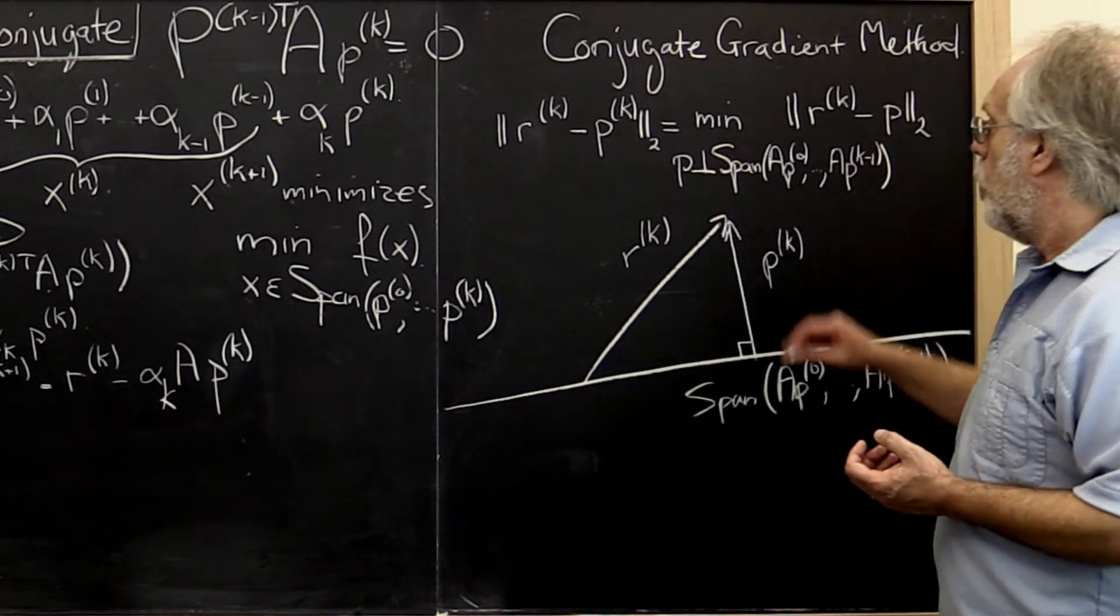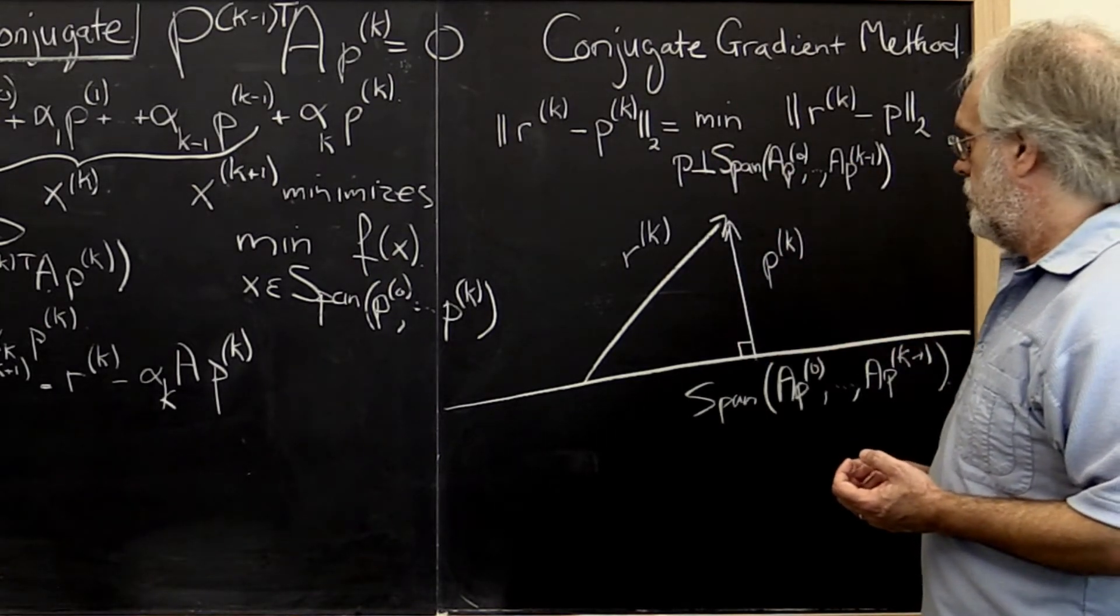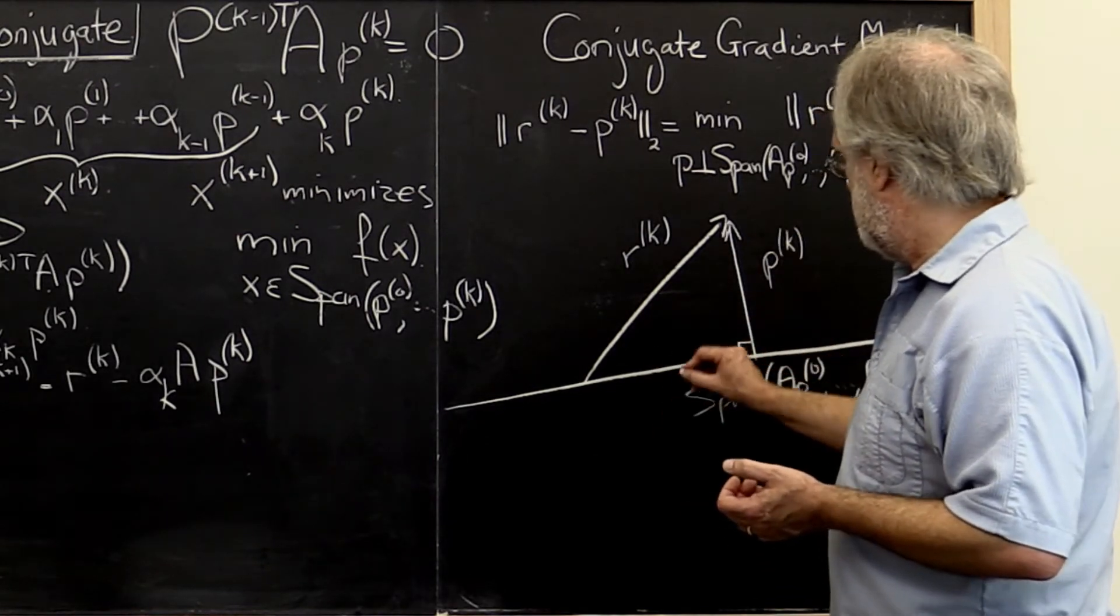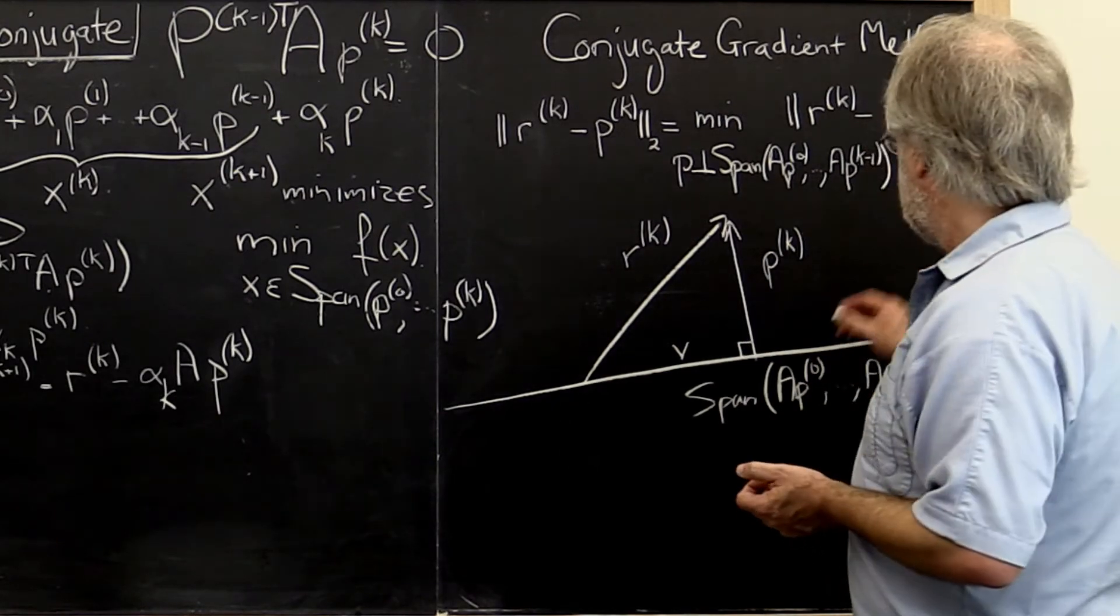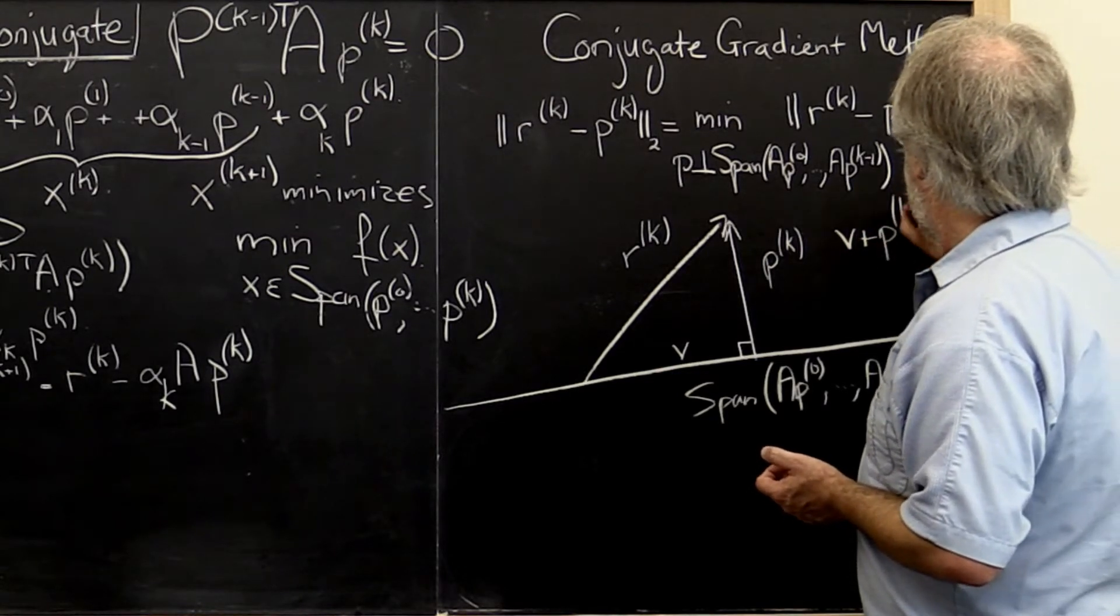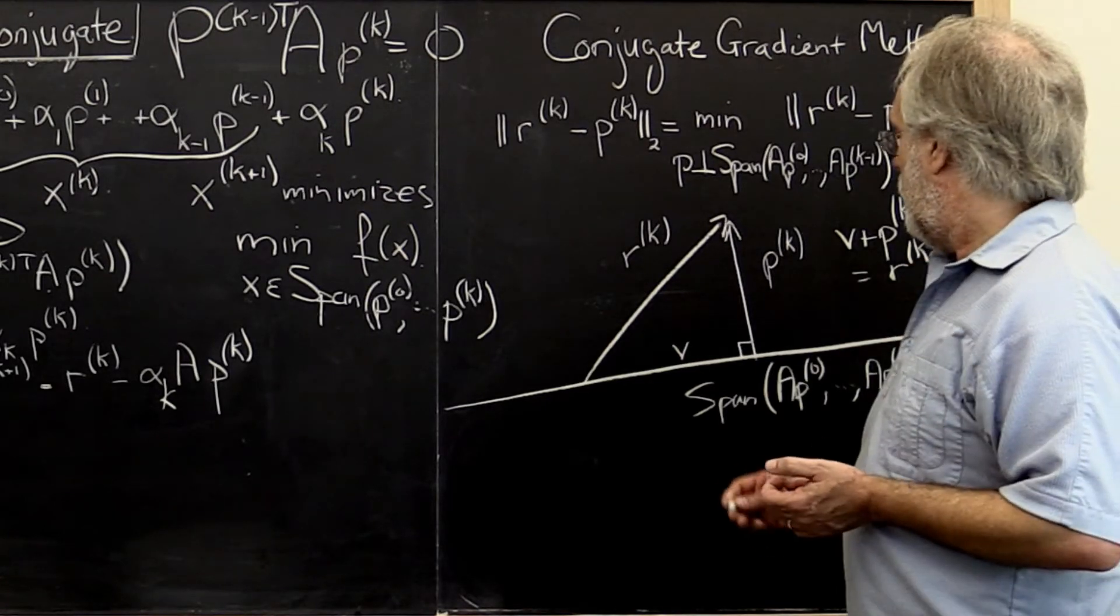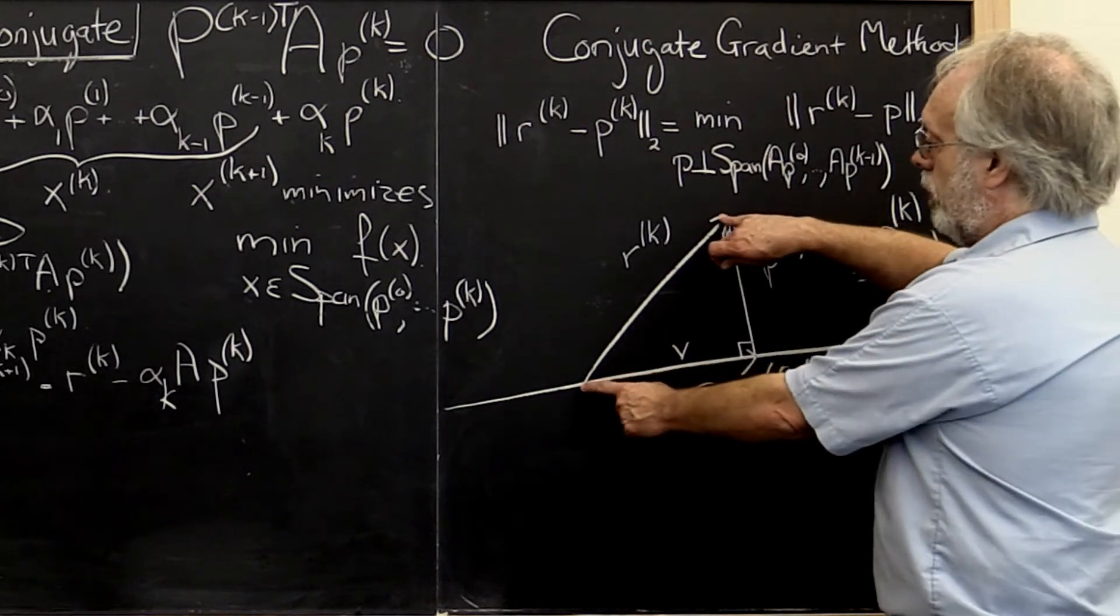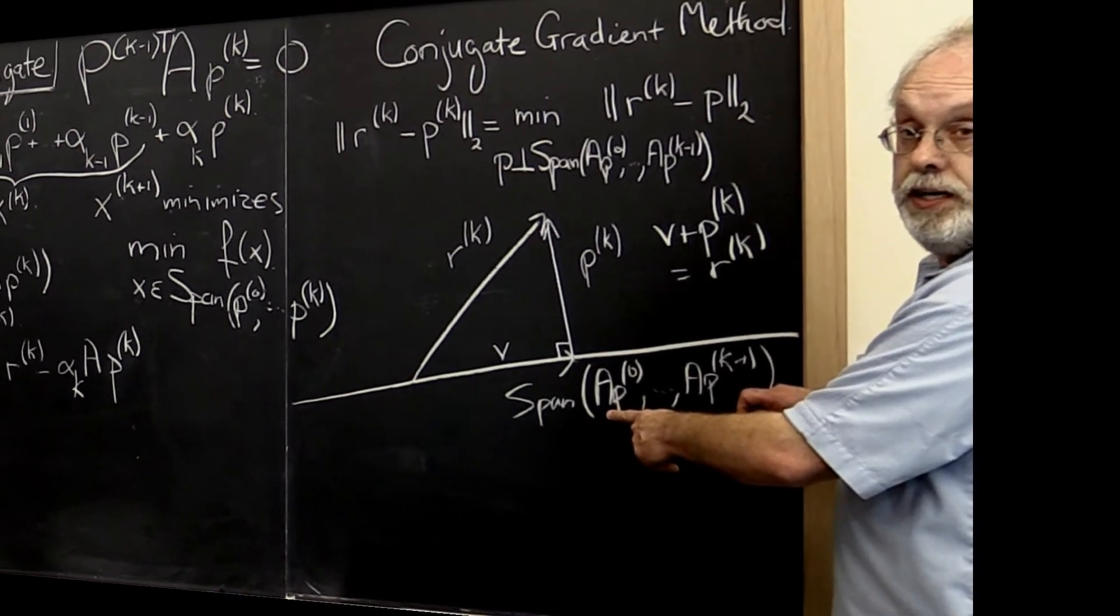Now what that means is that we can recast this into, let's call this vector here something. We'll call it V. We notice that V plus Pk is equal to our residual Rk. And we notice that V is really the projection of Rk onto the space spanned by these vectors right here.